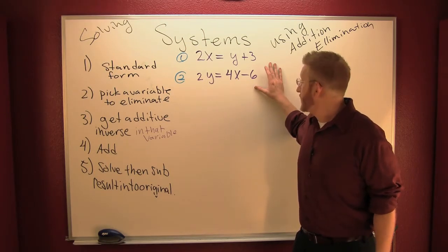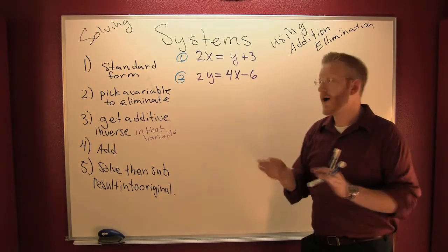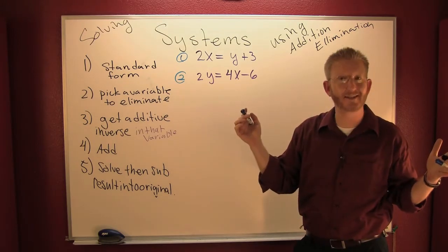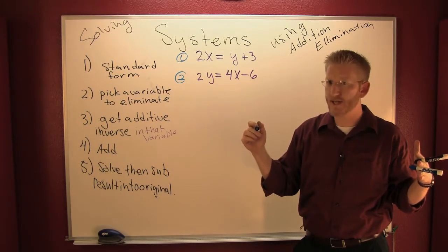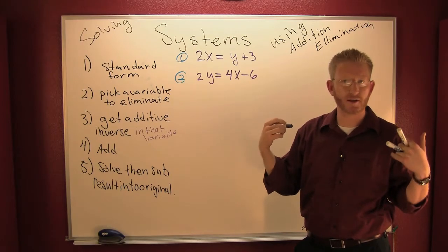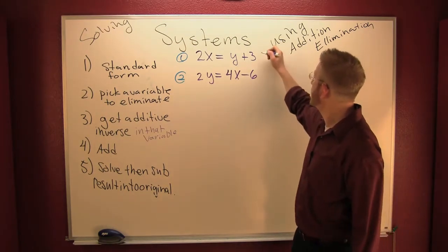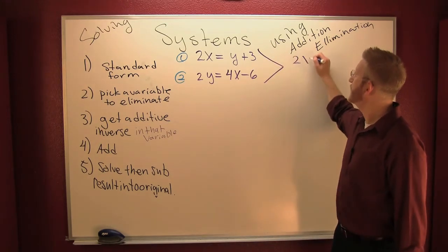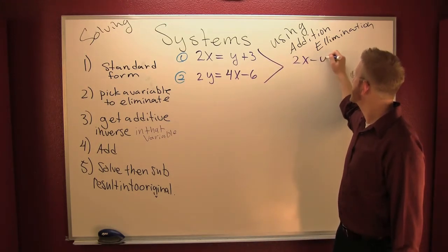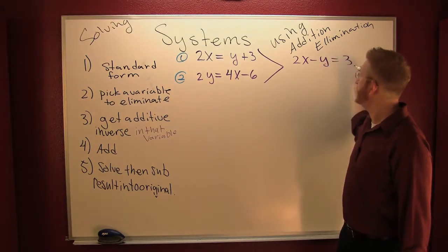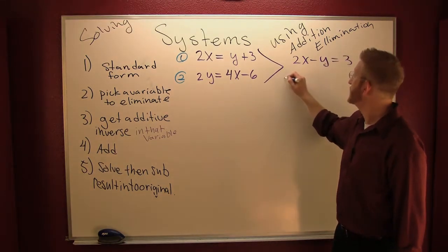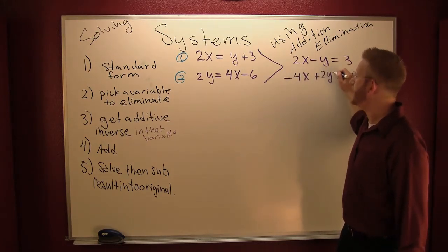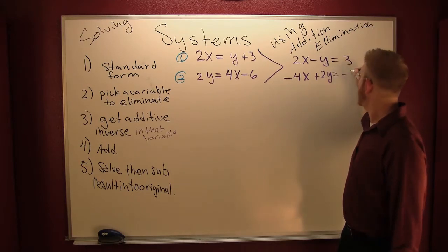Let's go ahead and do that. I'm going to skip steps because I have this much board to work on. You should be working this at home and make sure that you get the same thing. So thing one, this is 2x - y = 3, and thing two, this is -4x + 2y = -6.